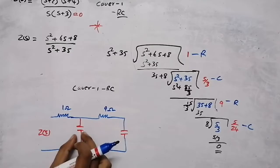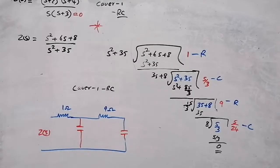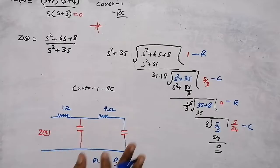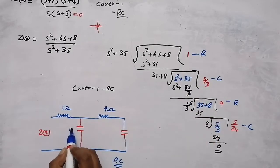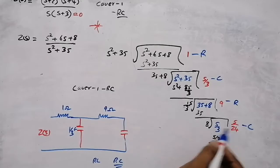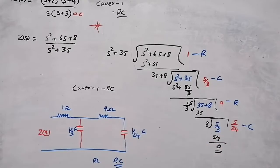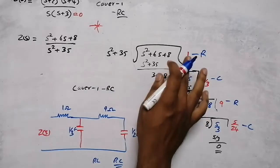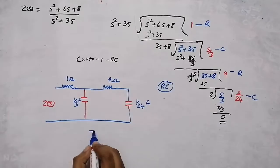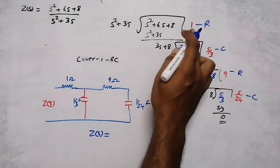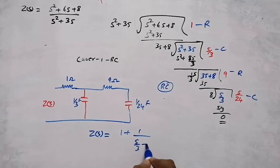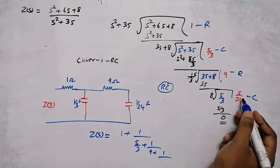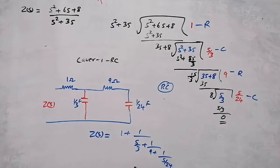For shunt (parallel) elements in an RC circuit — very important — whatever value appears, write that value directly (no reciprocal needed, unlike RL circuits). Here the first shunt element is 1/3s, so the capacitor value is 1/3 farad. The next shunt element is 1/24s, so the capacitor value is 1/24 farad. The impedance function in continuous fraction form is: 1 + 1/(s/3 + 1/(9 + 1/(s/24))).